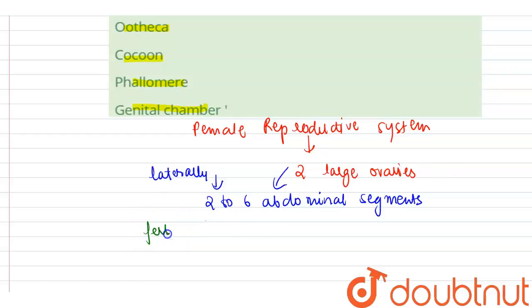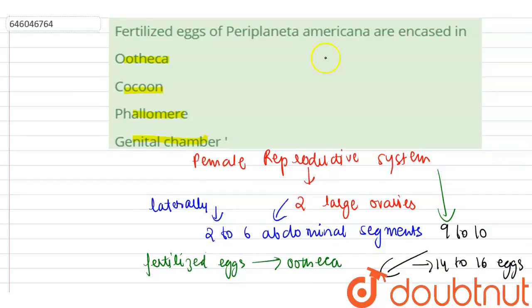The fertilized eggs in females are encased in a casing that is known as ootheca. Female cockroaches produce around nine to ten ootheca, which contain around 14 to 16 ova or eggs. So the correct option is ootheca.